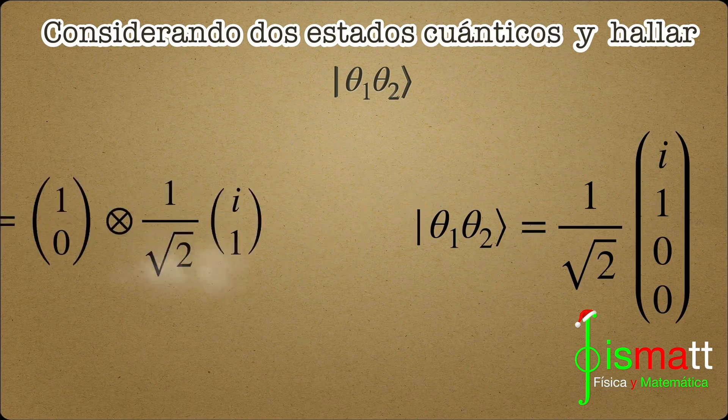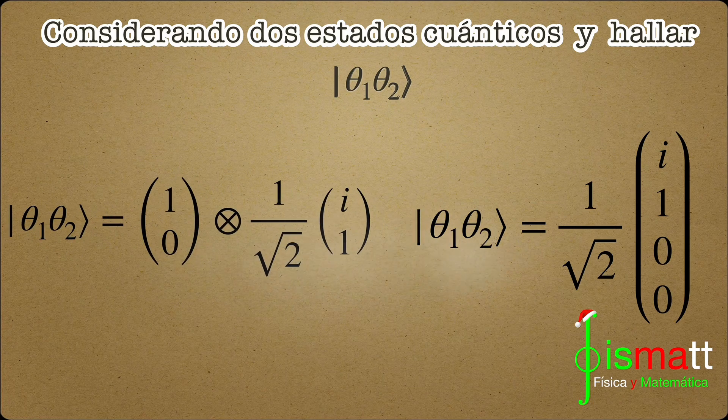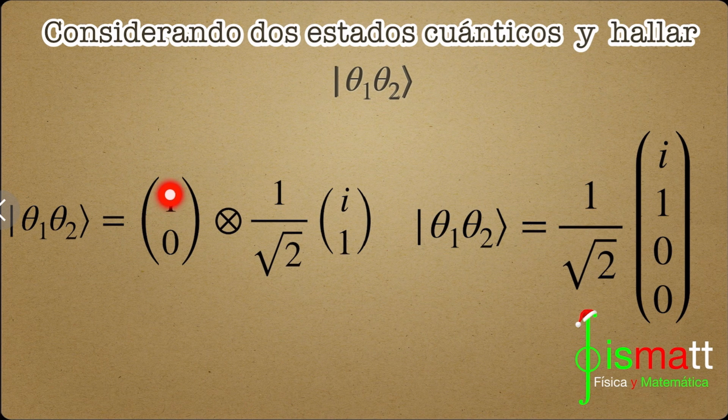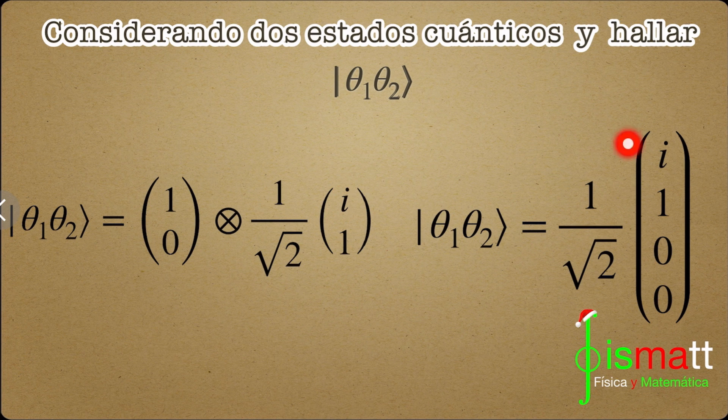So, to do the tensor product of ket of theta 1 and ket of theta 2, all we have to do is put one matrix next to the other and multiply each of their elements. It's like we're building a Lego tower.